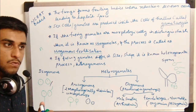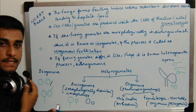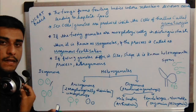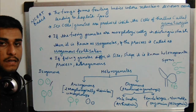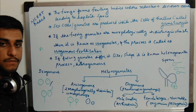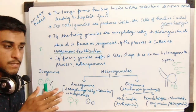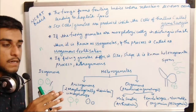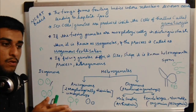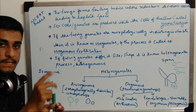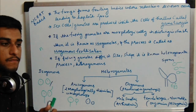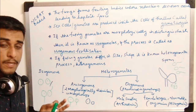If the male gamete and the female gamete are exactly similar in structure — morphologically indistinguishable, unable to distinguish as male or female — then these gametes are known as isogametes.